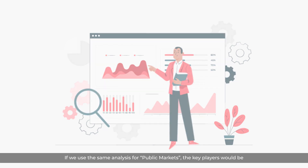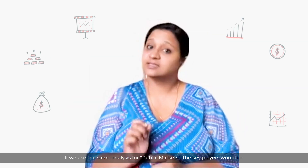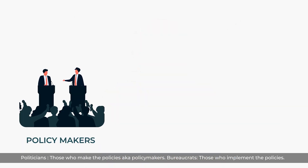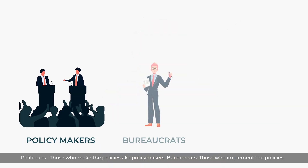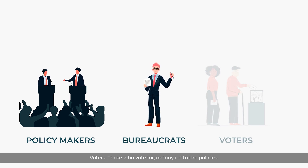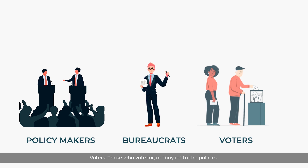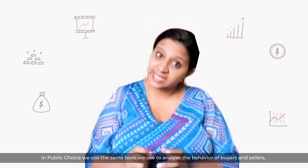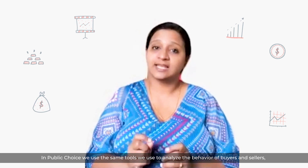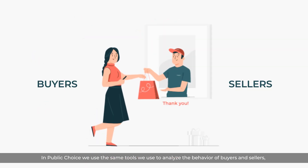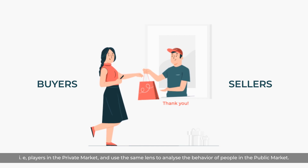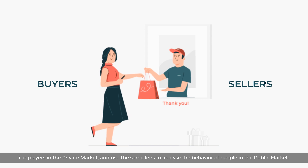If we use the same analysis for public markets, the key players would be politicians — those who make the policies, aka policymakers — bureaucrats, those who implement those policies, and voters, those who vote for or abide by the policies. In public choice, we use the same tools we use to analyze the behavior of buyers and sellers, that is players in the private market, and use the same lens to analyze the behavior of people in the public market.